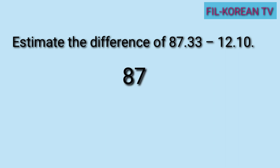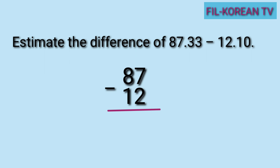I-round off din natin itong subtrahend na 12 and 10 hundredths. Yung whole number ay 12, ang number sa one's place ay 2. Ang nasa kanan ng 2 ay 1 — mababa sa 5. Kaya mag-round down tayo. Hindi natin babaguhin yung 2 na nasa one's place. Kaya yung whole number ay 12. Tapos na tayong mag-round off. I-subtract na natin: 87 minus 12. Umpisahan natin sa pag-subtract sa kanan. 7 minus 2 equals 5. 8 minus 1 equals 7. Ang estimated difference ay 75.